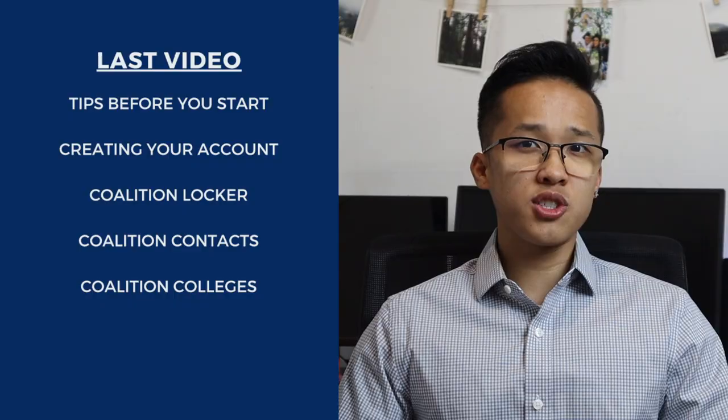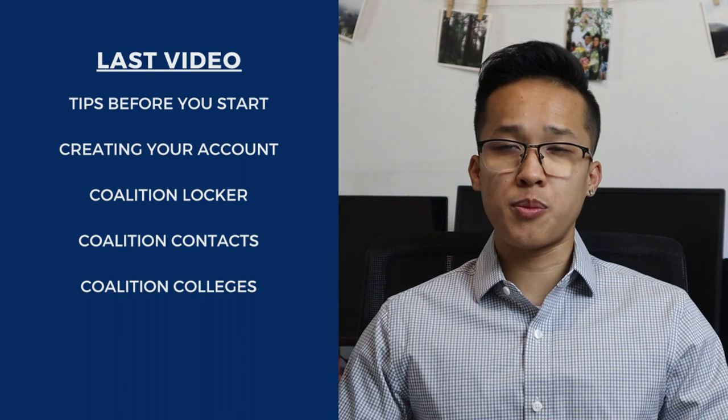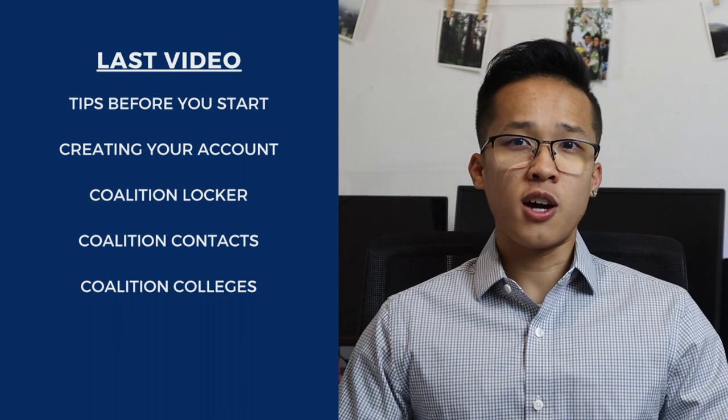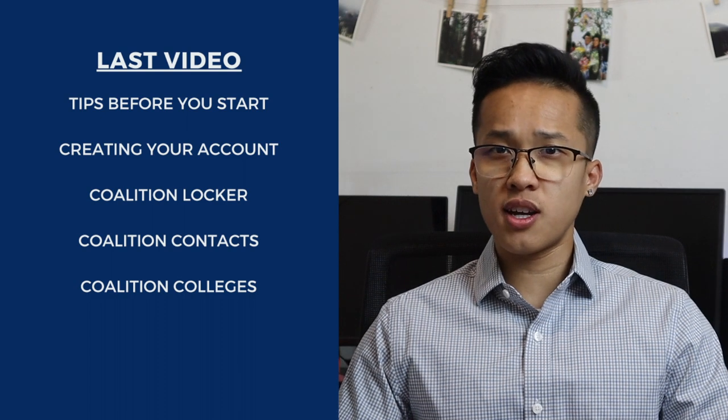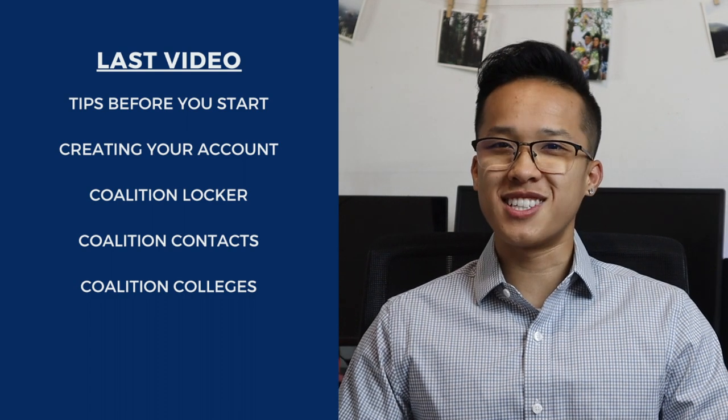Welcome to the second portion of the Coalition Application Walkthrough where I'll be walking you through the entire Coalition Application process. In the last video I went over things such as tips before you start your Coalition Application, how to create your account, and then I went over specific sections such as the contacts, the locker, as well as the college list. I think it was a really great video that pretty much walked you through three of the four main sections in the Coalition Application, so if you haven't done so yet I really do recommend you all to watch it.